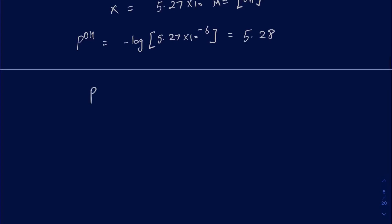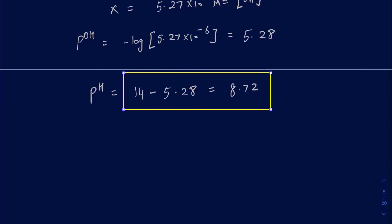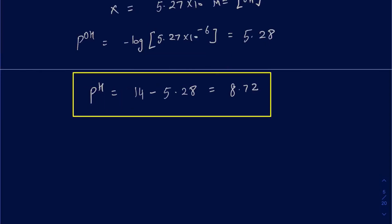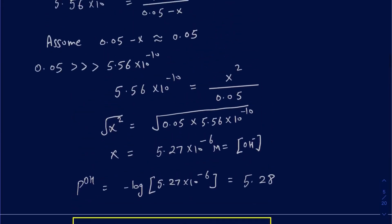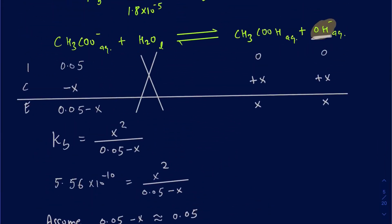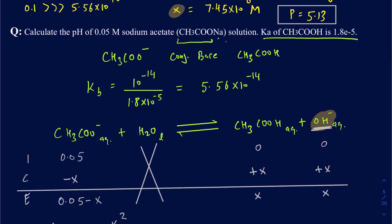The question asks for pH, not pOH. To find pH once you know the pOH, all you have to do is subtract from 14. So 14 minus 5.28 gives you 8.72. This comes out to be a basic pH, which is completely okay because you started out with a base — that's why it came out to be a pH over 7. So this is how you're going to be doing problems that involve weak acids or weak bases. If you have any questions, feel free to leave any comments in the section below.